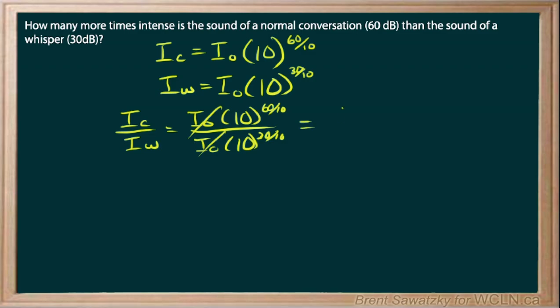So what we could do is we could just say that that's 10 to the 6 over 10 to the 3. And we have the same base, and so we just subtract the exponents. So 6 minus 3 is just 3. And we do know that 10 to the 3 is just 1,000.